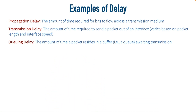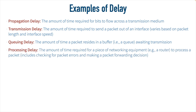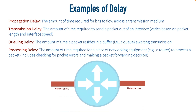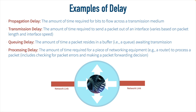This is not a comprehensive listing, but as one other example of delay, consider processing delay. When a packet comes into a router, that router has to do some work on it — it has to check it for errors, look at its routing table, and see out of which interface that packet needs to be forwarded. That amount of time gives us our processing delay. So those are a few examples of delay: propagation, transmission, queuing, and processing. Remember that it is the sum total of all delays that gives us our end-to-end latency between two different places in the network.